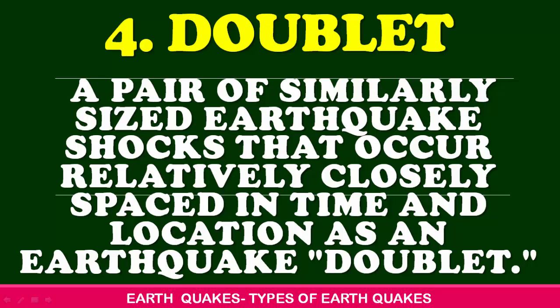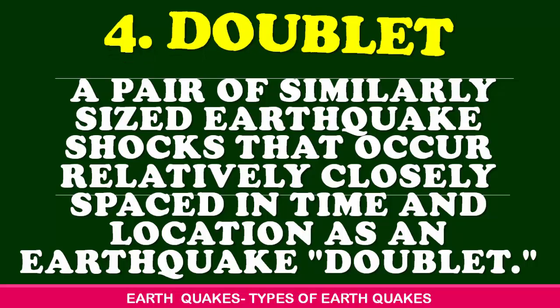4. Doublet: A doublet is a pair of similarly sized earthquake shocks that occur relatively closely spaced in time and location, known as an earthquake doublet.